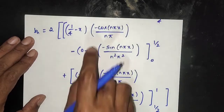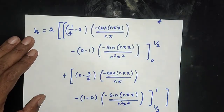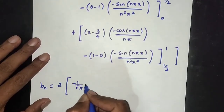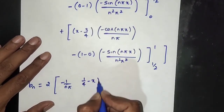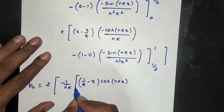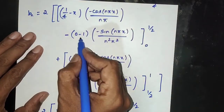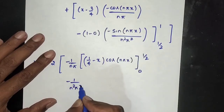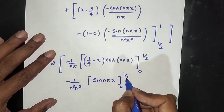Limit 0 to 1/2. Plus into minus gives minus 1 by n pi. The x-term: (1/4 minus x) cos(n pi x), limit 0 to 1/2. Next step: minus into minus gives plus, plus into minus gives minus. Minus 1 by n squared pi squared times sin(n pi x), limit 0 to 1/2. Plus 1 by n pi, limit 1/2 to 1. bn equals 2.